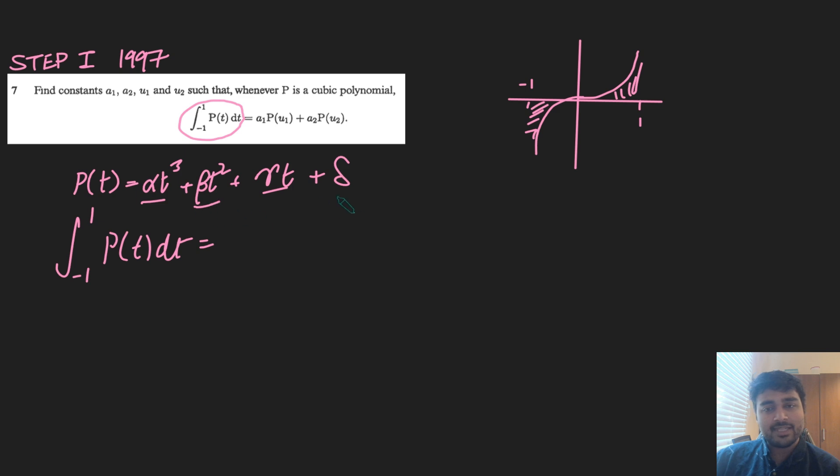So in fact, I'm just left with the even terms, beta and delta, and if you work this out, this gives me 2 beta over 3 plus 2 delta. Okay, great.